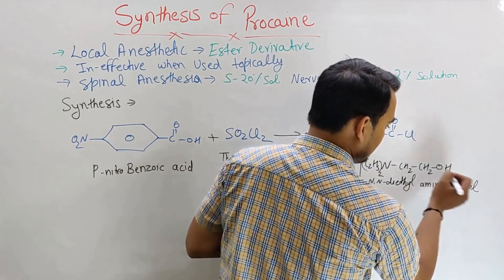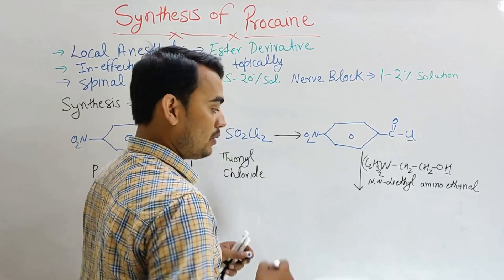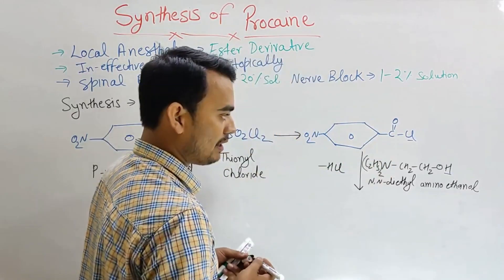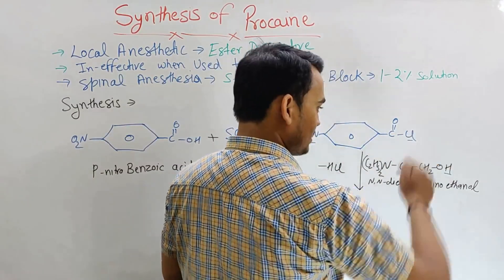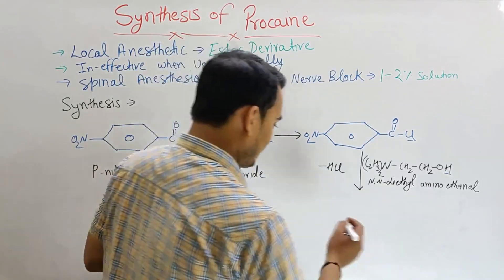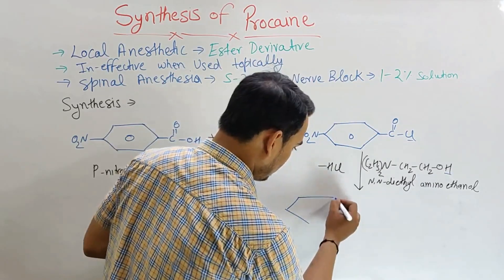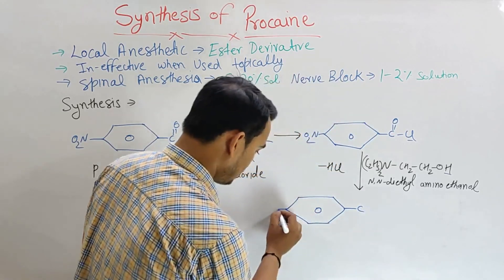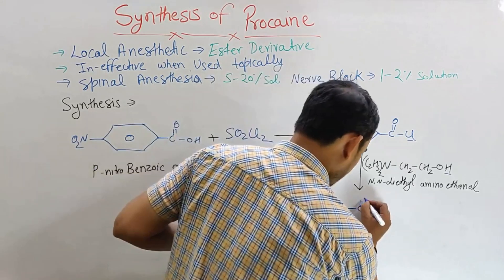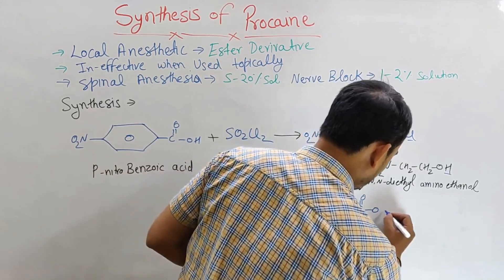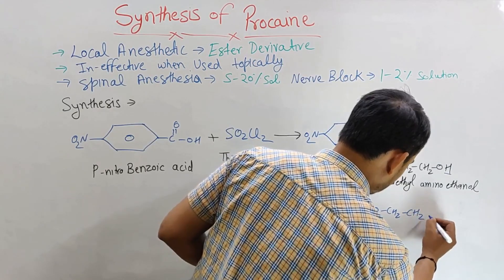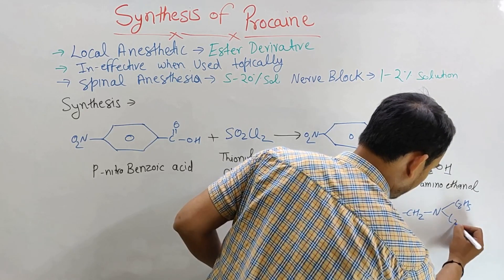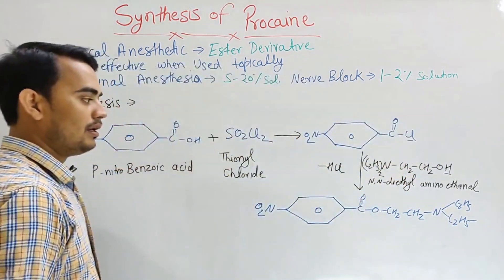Here this H and this Cl will be removed out as a form of HCl. So minus HCl will be removed. This O will join with this carbon. The ultimate next intermediate here will form: NO2-benzene-COO-CH2-CH2-N with C2H5 twice.